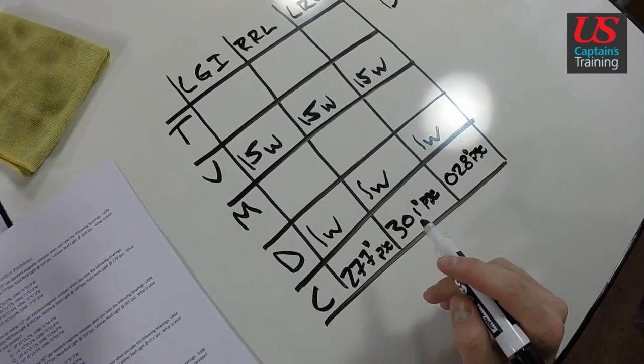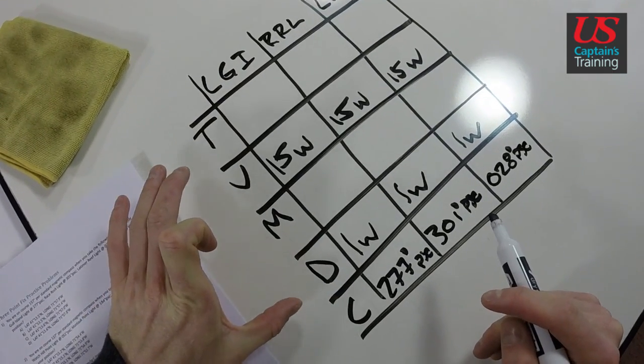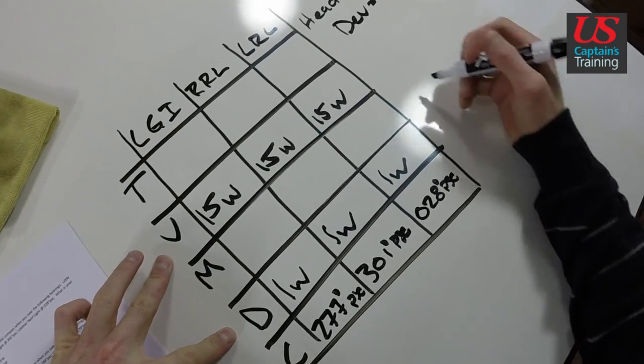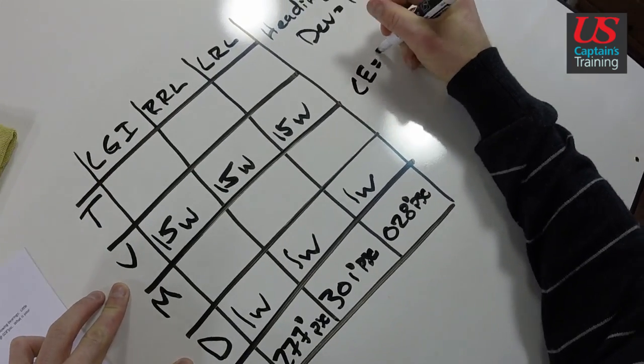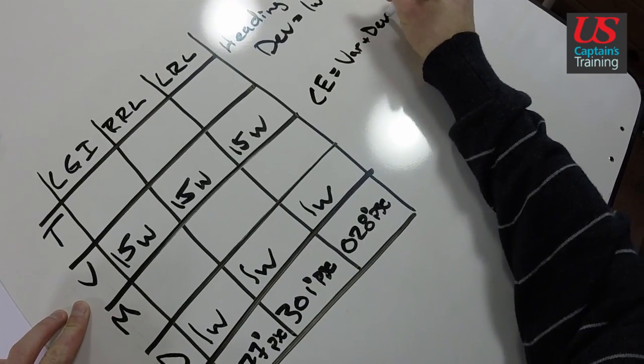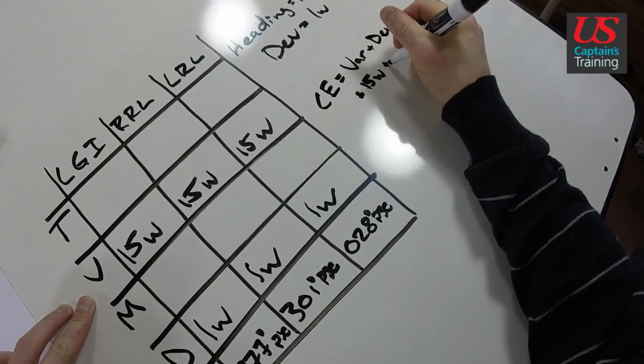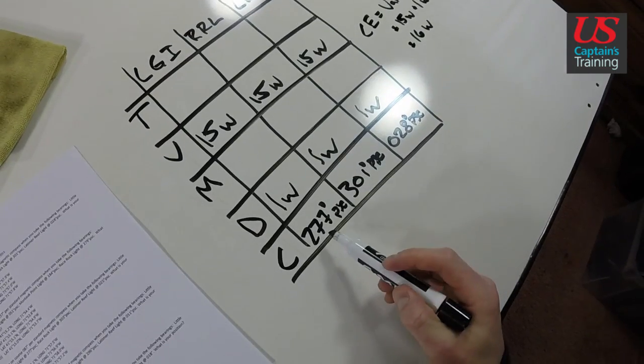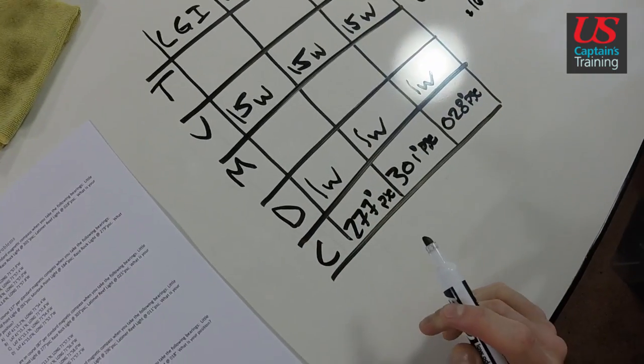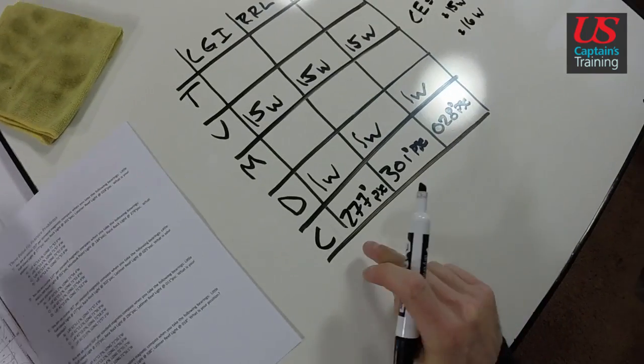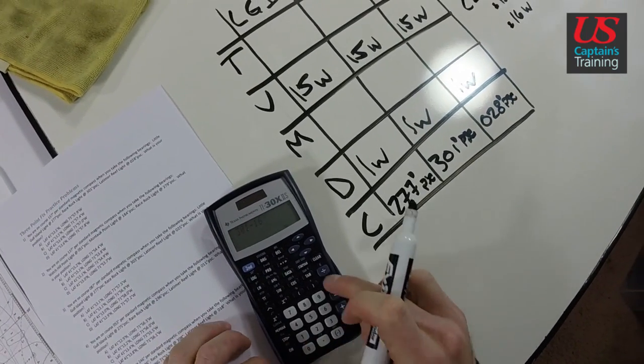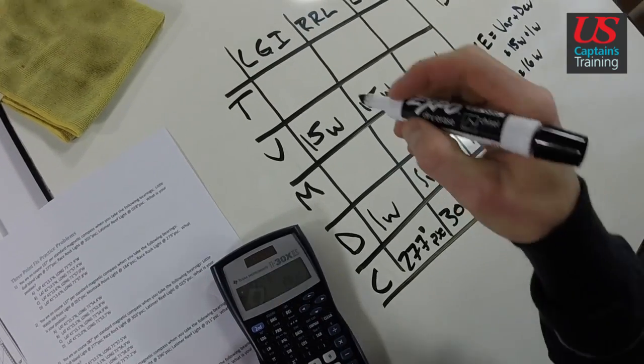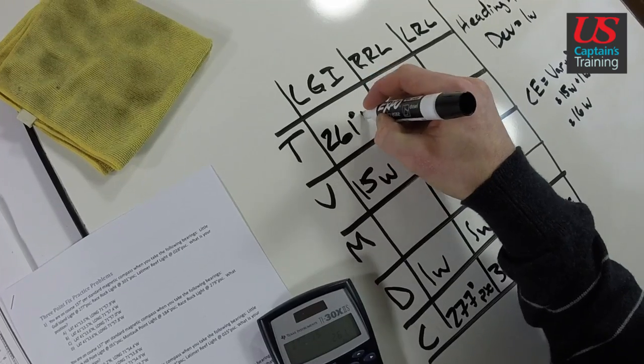Now we're going to take these up. There's two components: the compass error, variation and deviation. If you add them together you get the full compass error. Compass error equals variation plus deviation, which equals 15 west plus one west, or 16 degrees west. When we go up we subtract west. 277 minus 16 equals 261 degrees true.